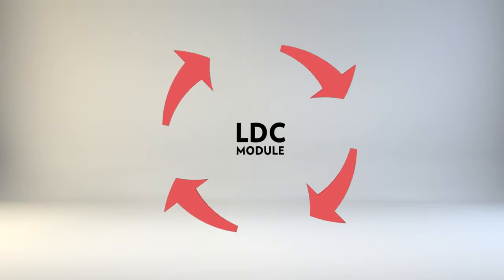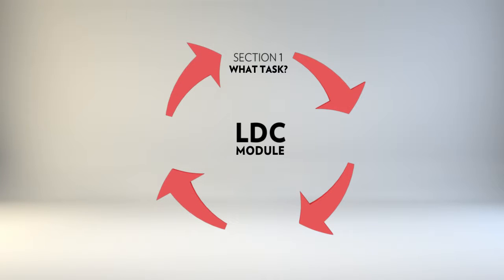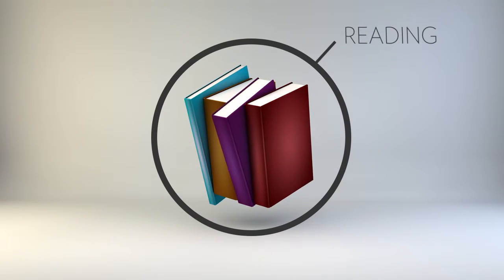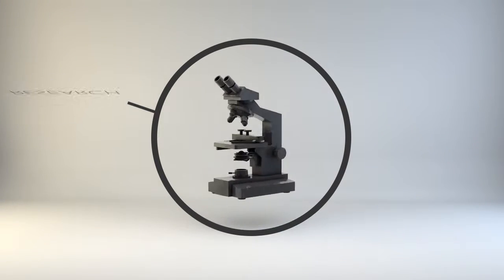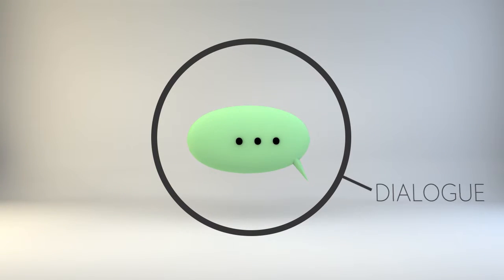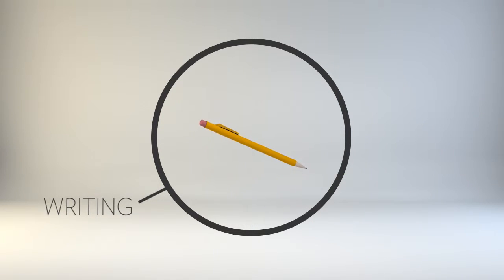LDC modules have four components: what task, what skills, what instruction, and what results. The module provides a blueprint for integrating content and the Common Core in a two to three week instructional plan, which engages students in reading, research, dialogue, and writing about important topics and issues.